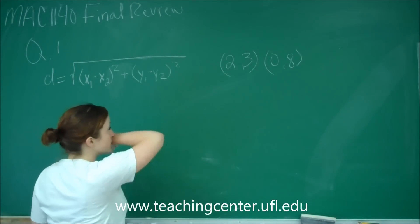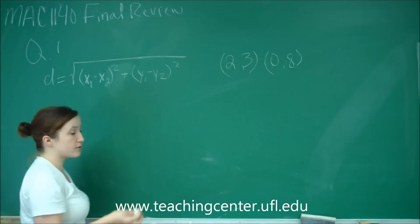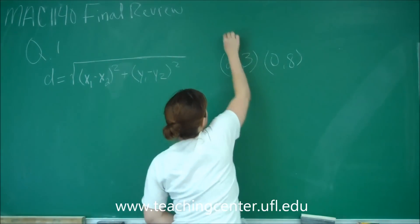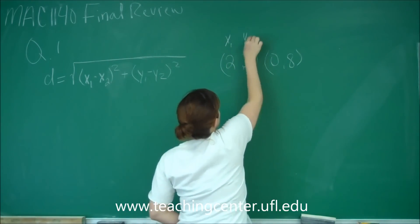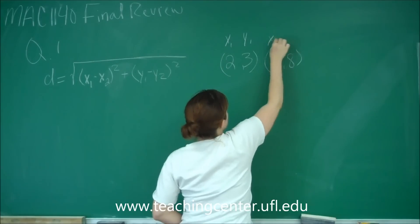So to find the distance between those two points, we get to just plug and chug. So you assign one point to be x sub 1, y sub 1, and the other point to be x sub 2, y sub 2.